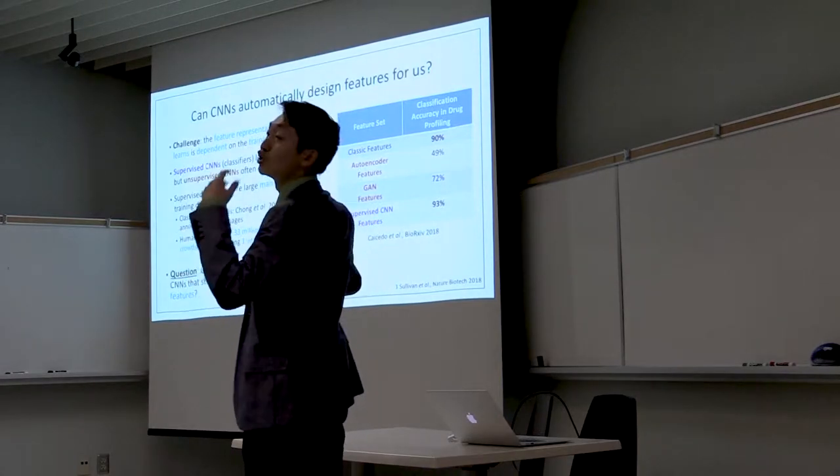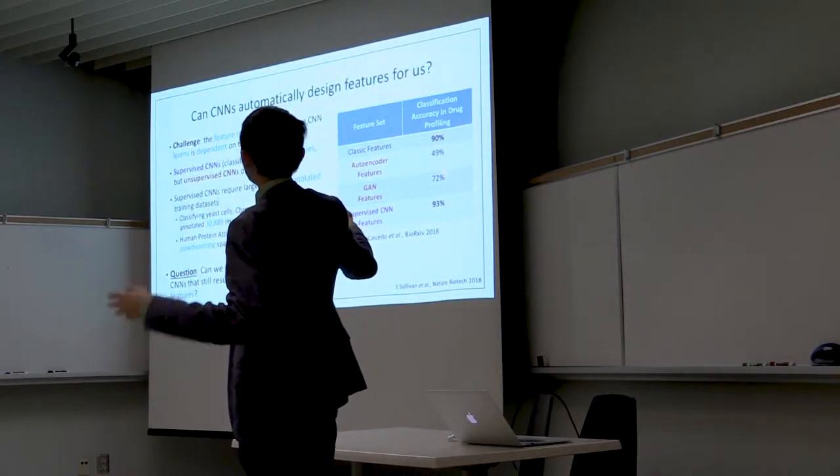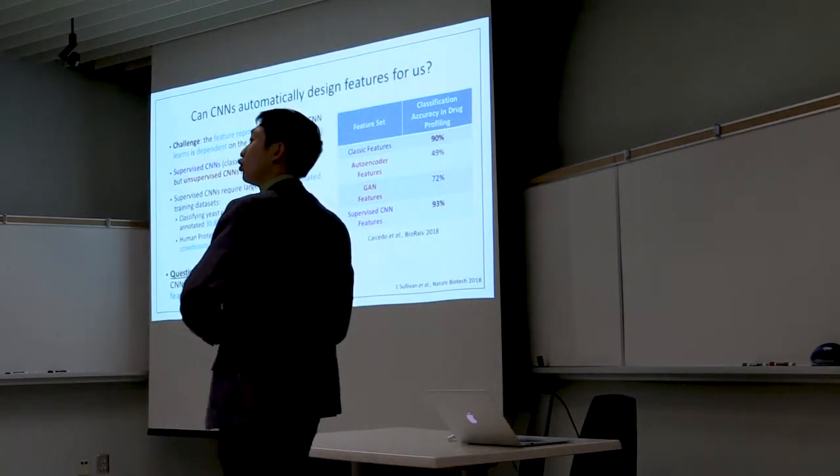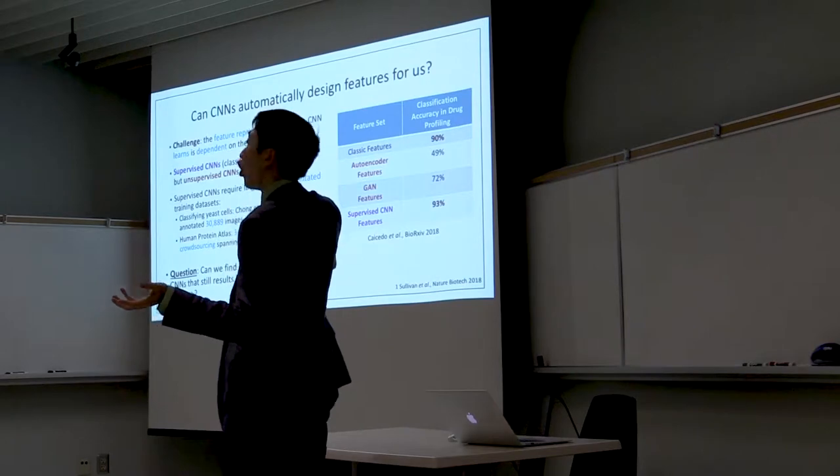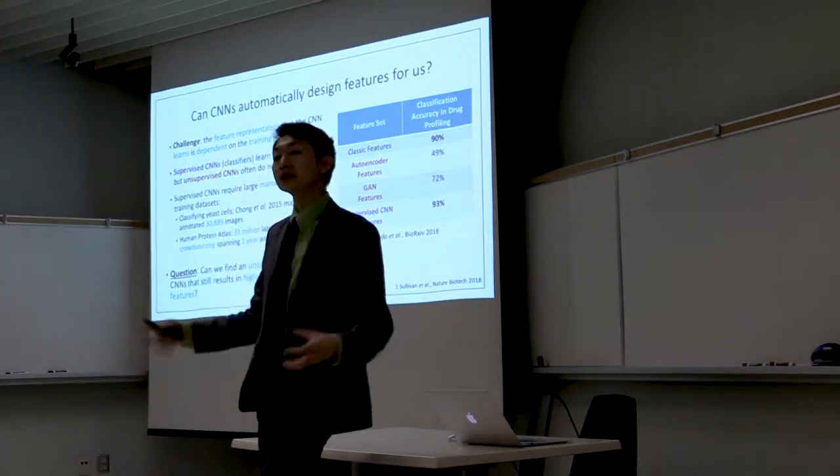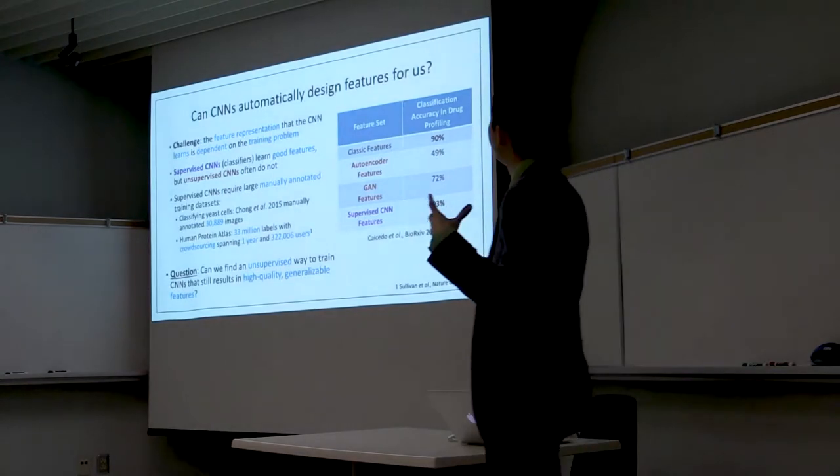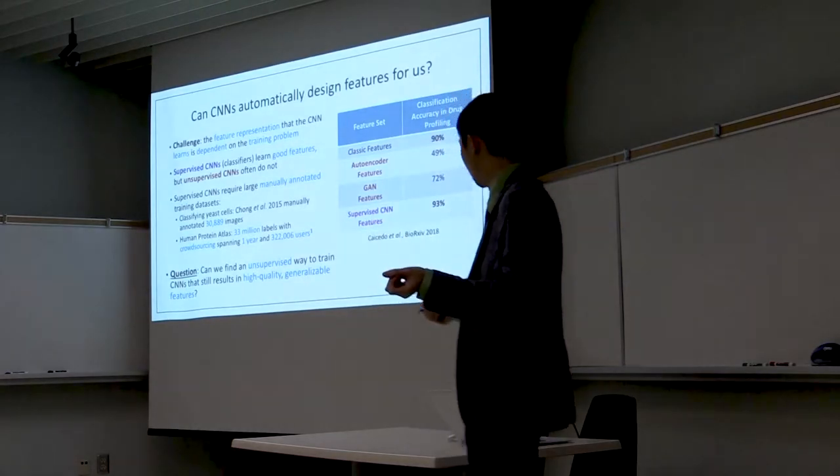What we do know then is that supervised CNNs, so classifiers, tend to learn rich features, but unsupervised CNNs, where we do simple tasks such as reconstructing images, often do not. Now this is a key critical limitation, because supervised CNNs require large, manually annotated training datasets. And it takes a lot of work for people to collect these annotated datasets. So the question I'm going to address today is, can you find an unsupervised learning regime for CNNs that still learns high-quality, generalizable features?